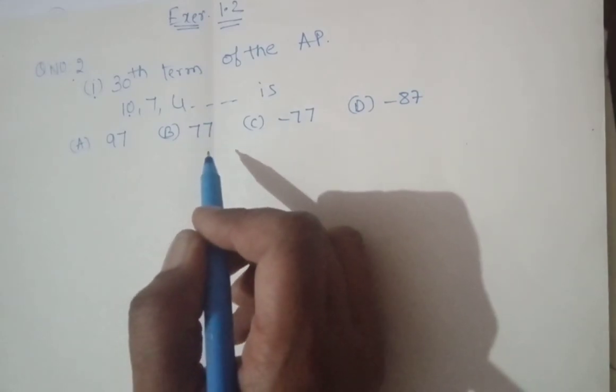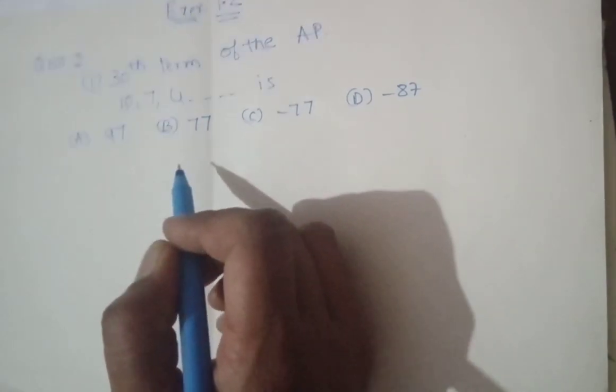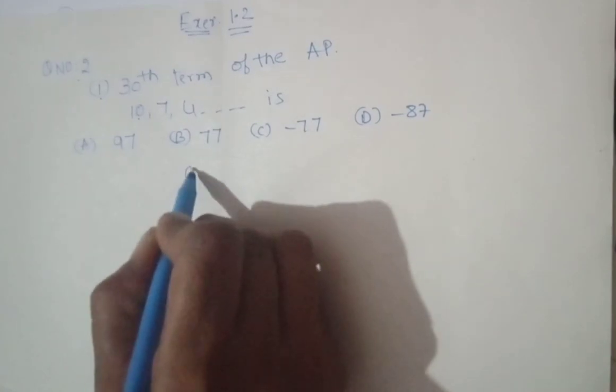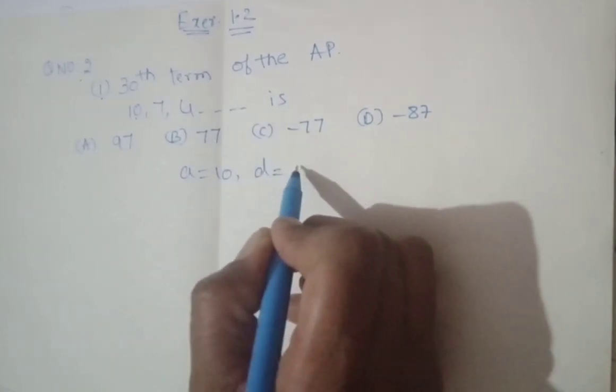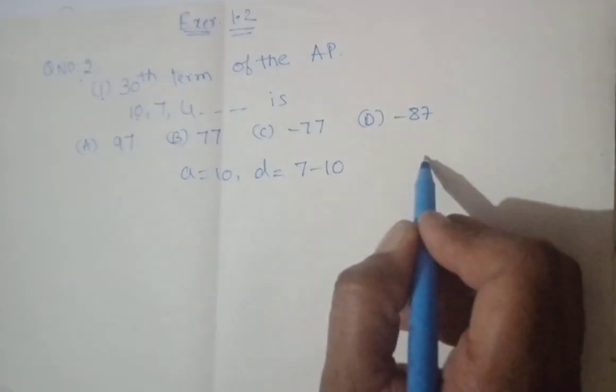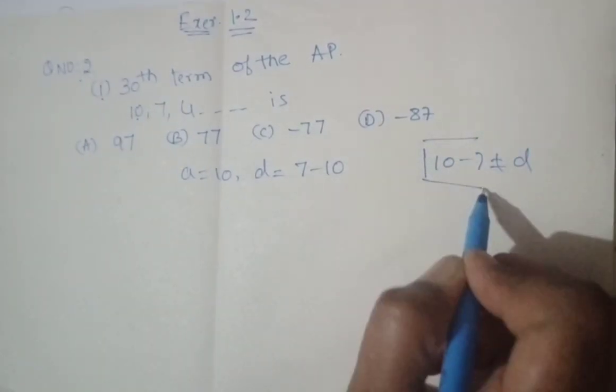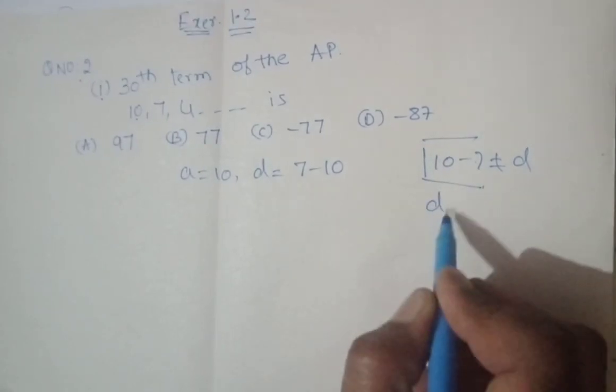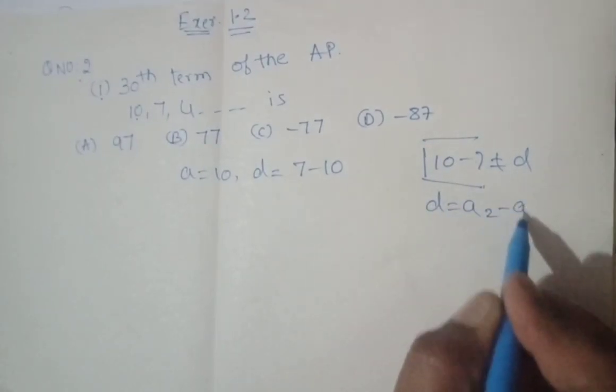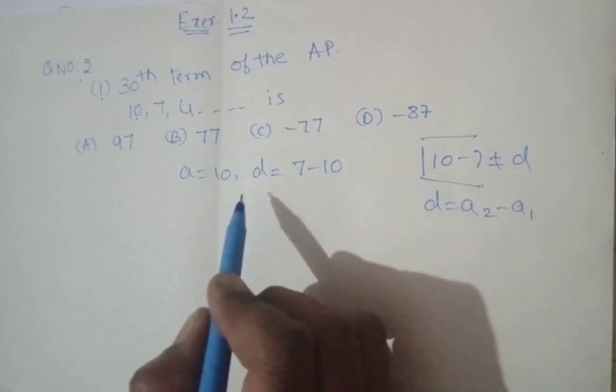Now look at this. You have here a equals 10. Then d equals 7 minus 10. Be careful with this one - 10 minus 7 is not equal to d. So always, d is calculated as the next term minus the previous term. This is what you have here.